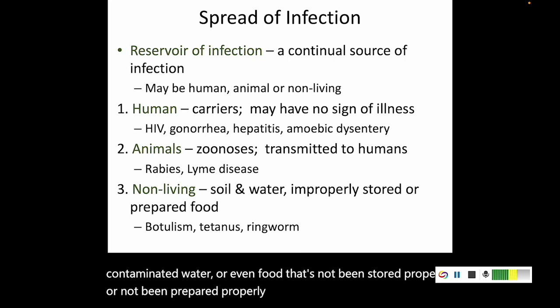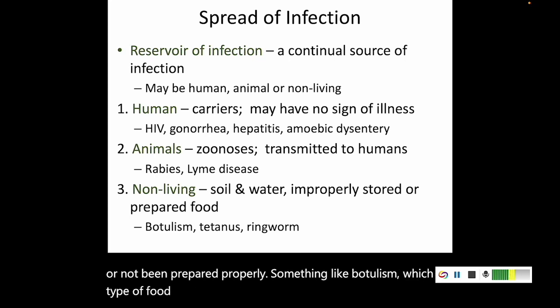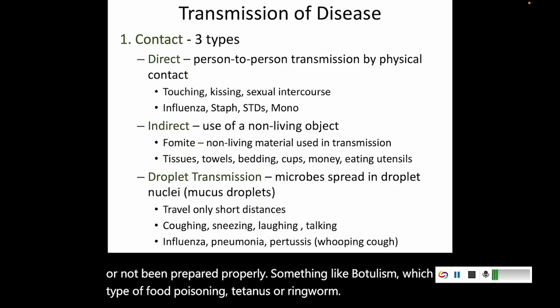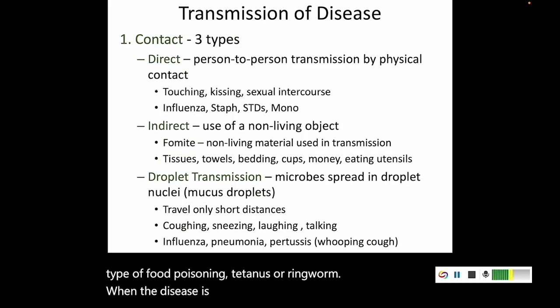Examples of non-living reservoir diseases include botulism, which is a type of food poisoning, as well as tetanus and ringworm. When the disease is spreading between people, it's called contact transmission. Direct contact means two people are directly making physical contact — touching, kissing, or having sexual intercourse.